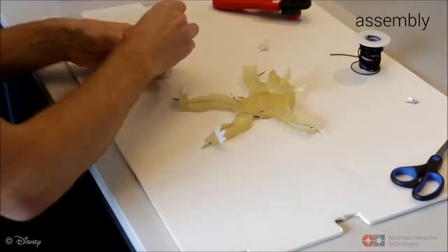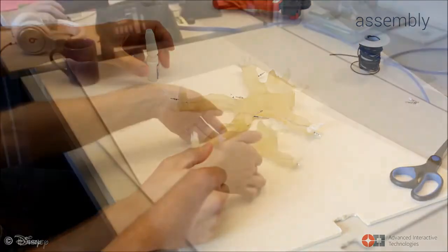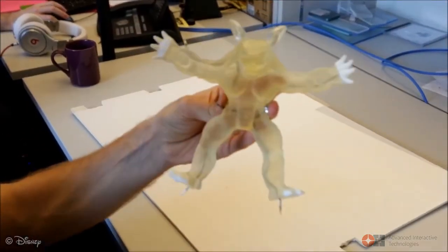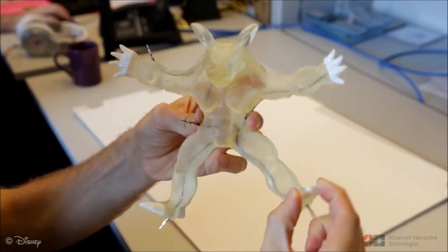After assembly of the flexible parts, rigid 3D printed handles are added. The embedded sensor wires then deform with the surrounding material during user interaction.